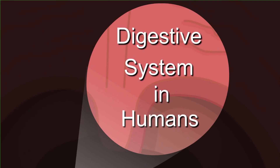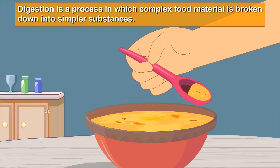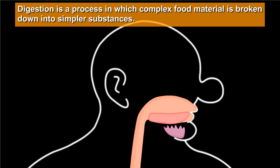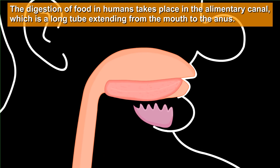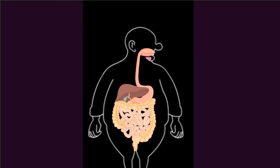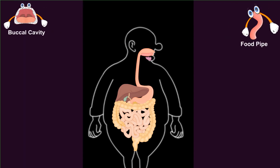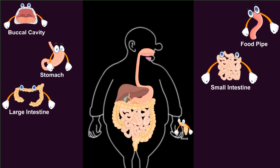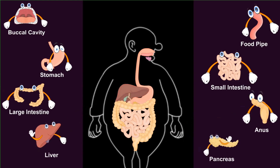Our topic for today is the digestive system in humans. Digestion is a process in which complex food material is broken down into simpler substances. The digestion of food in humans takes place in the alimentary canal, which is a long tube extending from the mouth to the anus. The different parts of the alimentary canal are the buccal cavity, food pipe or esophagus, stomach, small intestine, large intestine, and anus. Two glands, namely the liver and pancreas, also help in digestion.